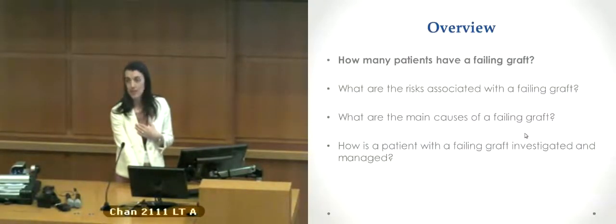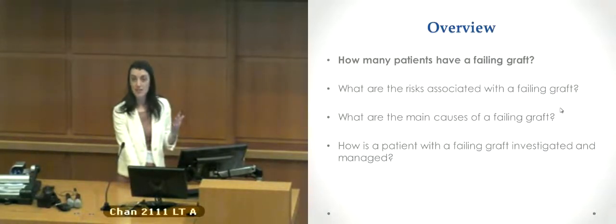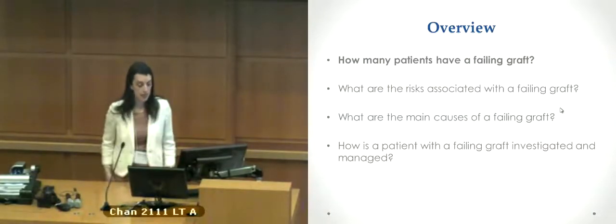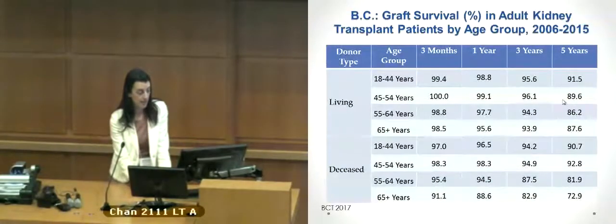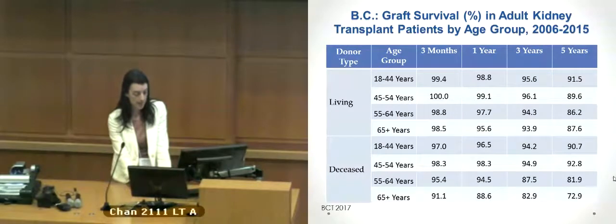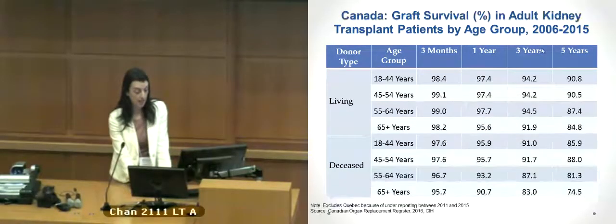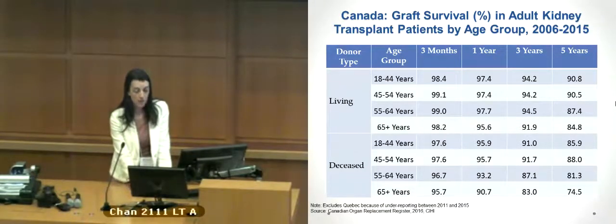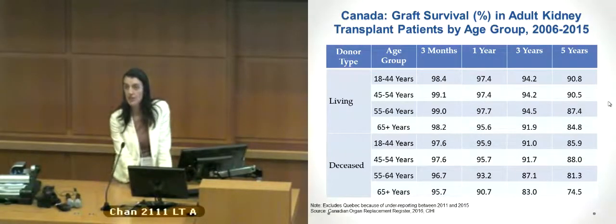So how many people have a failing graft? We look at kidney survival data. Here in BC, between 2006 and 2015, you can see the survival rates divided into living and deceased donation, stratified by age groups. At five years, the average survival is around 90%, and similarly with deceased donation. This is actually a little bit higher than the national average over the same time period. So if you think about five years — 90% or more of patients are surviving — that is a very good survival rate.